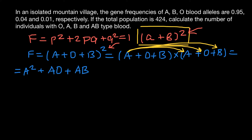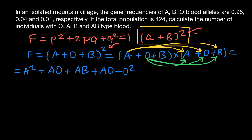Next we multiply the O term: O times A gives AO, O times O gives O², and O times B gives BO.